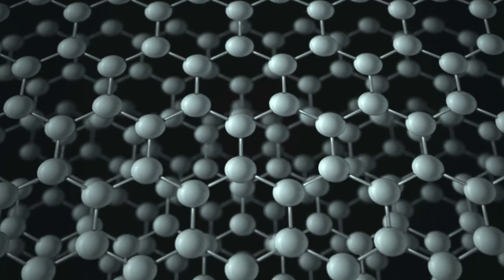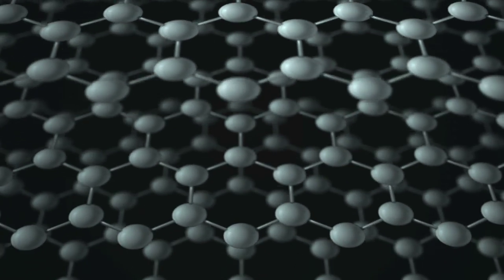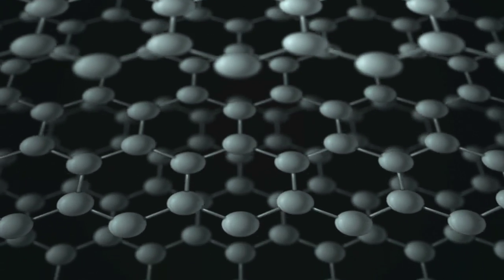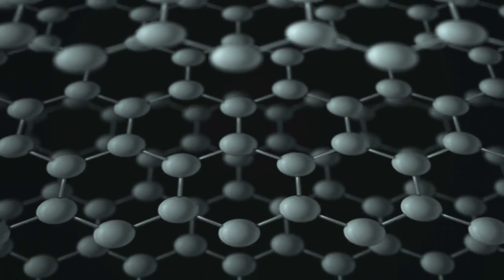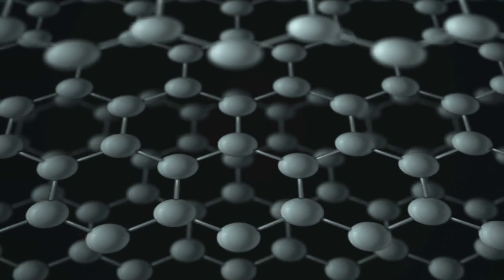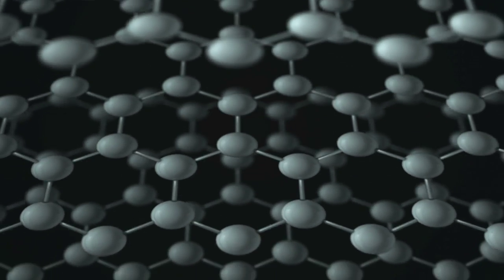In graphite, each carbon atom is linked to three others in layers of hexagonal shapes that look like chicken wire. The bonds within the hexagonal sheets are strong, but each layer is only weakly attracted to the next, which allows the layers to slip by one another.